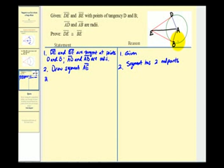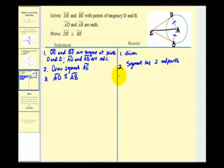Now that we have our two triangles, let's go ahead and state that segment AD is congruent to segment AB. The reason for this is that all radii of the same circle are congruent.